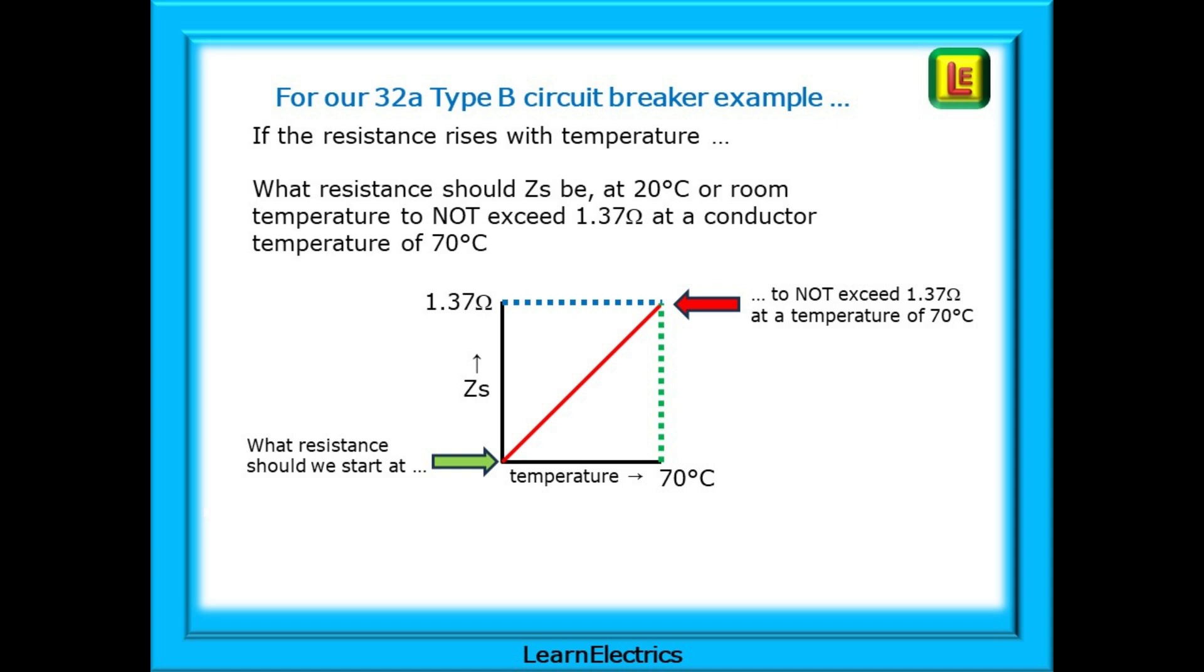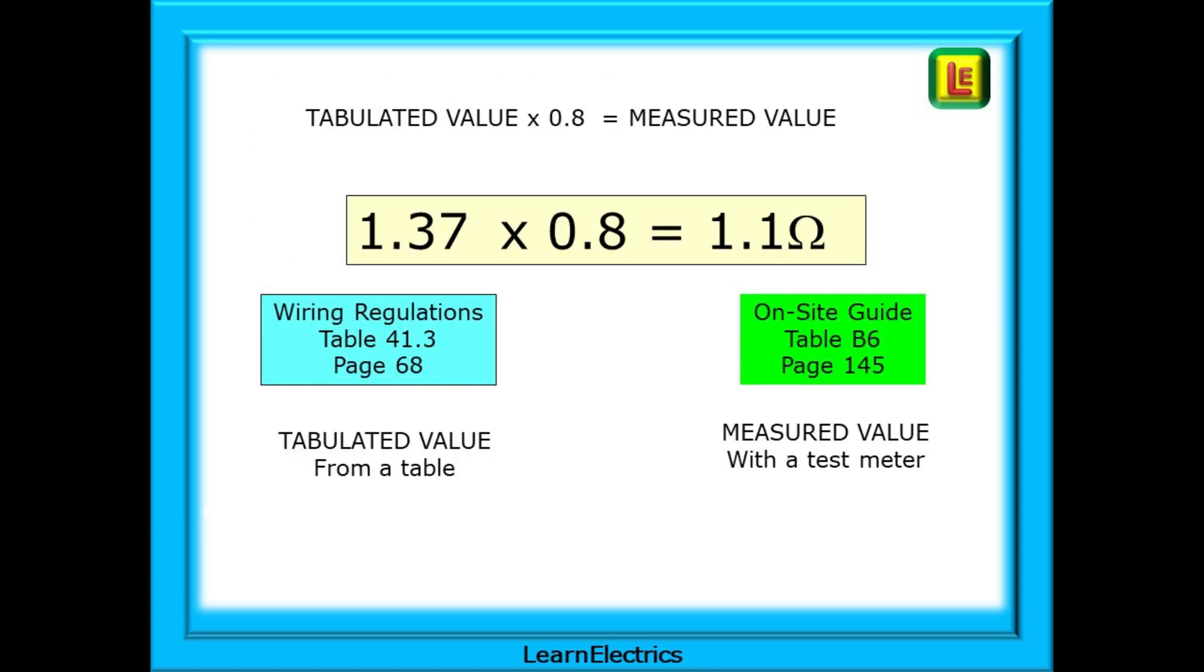So if the resistance rises with temperature what resistance should ZS be at 20 degrees centigrade or room temperature to not exceed 1.37 ohms at the conductor temperature of 70 degrees Celsius. What is the new starting point? How much lower must the resistance be? On this drawing what should the starting point be at the green arrow at 20 degrees so that we do not exceed 1.37 ohms at the red arrow when the conductor is at 70 degrees? This is where the 80% rule comes in. Take the tabulated value and multiply by 0.8 to get yet another value.